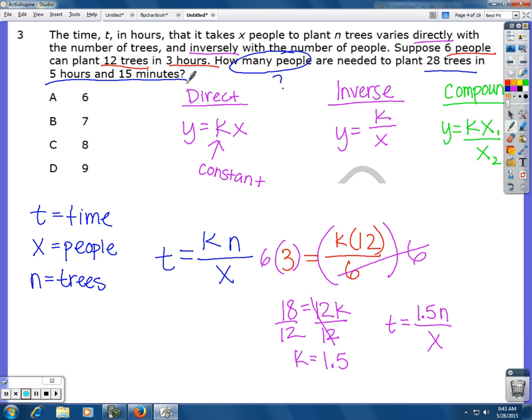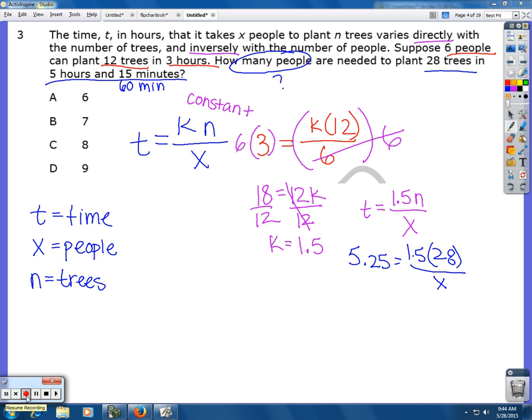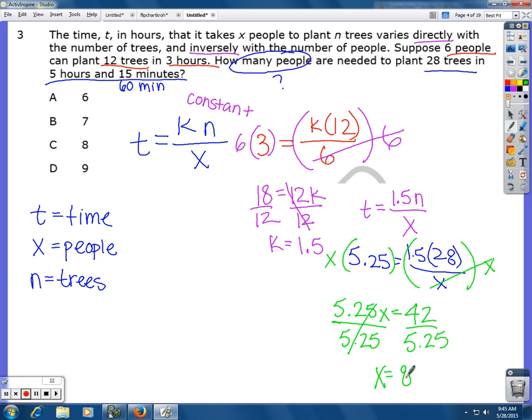So I'm going to go back over here and plug in. My time is now going to be 5 hours and 15 minutes. Now, that doesn't mean that I should do 5.15. There are 60 minutes in an hour. So 15 out of 60 is actually 0.25. That's a fourth. So my time is actually 5.25. The number of trees that I'm planting are 28. And I'm solving for the number of people. That's x. So I need to get x out of the denominator. I'm going to multiply by x on both sides. Over on this side, I'm going to have 1.5 times 28. That's going to give me 42. Then I'm going to divide by 5.25 on both sides. And x is going to be 8 people. So that means I'm going to need 8 people to plant 28 trees in 5 hours and 15 minutes.